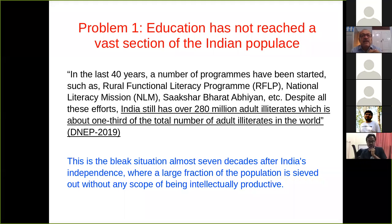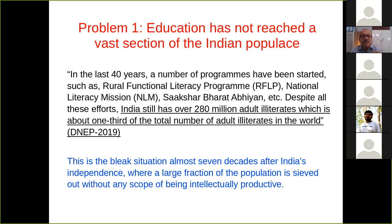Despite all these efforts, India still has over 280 million adult illiterates, which is about one-third of the total number of adult illiterates in the world. This is a bleak situation. Even after seven decades of independence, this essentially implies that all governments so far have not taken education seriously.